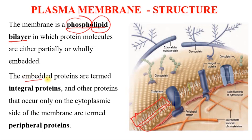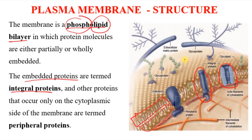Embedded in the bilayer are proteins we call integral proteins. You can identify this as an example of an integral protein because it is found within the two layers, showing up as well as down. We can also look at what we term peripheral proteins — coming from the word 'periphery.' The bilayer has proteins mixed within it, so at certain portions you'll see a protein molecule on the outside that also moves into the interior.